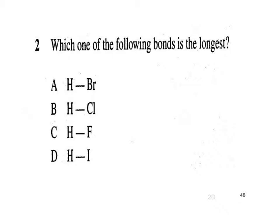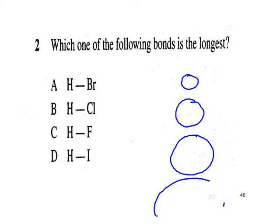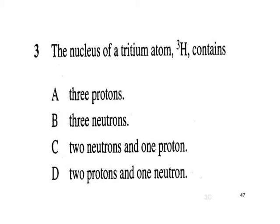Pause and have a go. These are the hydrogen halides. As we go down the group from fluorine to chlorine to bromine to iodine, the atoms are getting bigger, and as a result the HI bond is the biggest — the answer was D. Atomic number of hydrogen is 1. Tritium is one of the three isotopes of hydrogen. The mass number is the sum of protons and neutrons, so subtracting the atomic number from the mass number leaves 2 neutrons. So there will be 1 proton, 1 electron, and 2 neutrons — the answer is C.